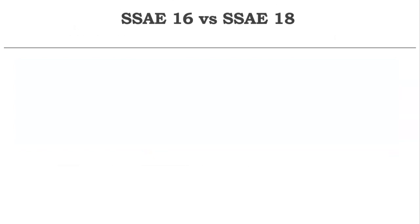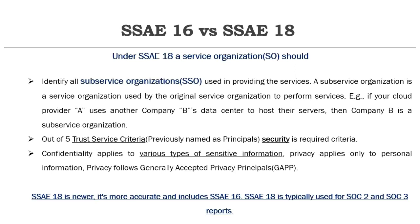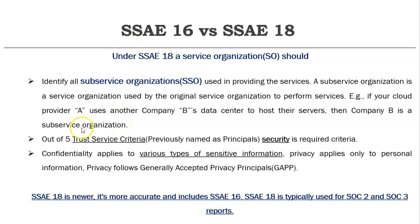From 2017 onward, SSAE 16 was replaced by SSAE 18. SSAE 18 is a newer, more accurate version that includes everything from SSAE 16. SSAE 18 typically uses SOC 2 and SOC 3 reports mainly for auditors. A key addition in SSAE 18 is the sub-service organization concept: service organizations must identify all sub-service organizations used to provide services. For example, if a cloud provider uses another company's data center, that data center is the sub-service organization.